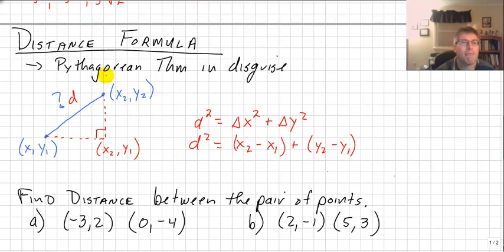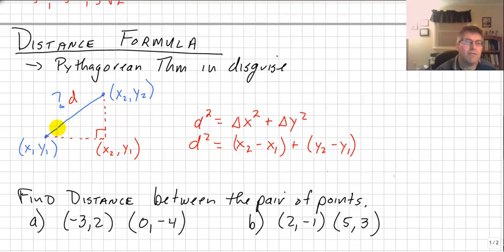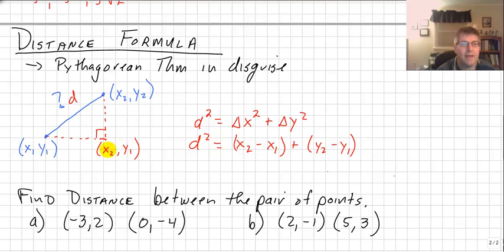Let's take a look at the distance formula. The distance formula is really the Pythagorean theorem in disguise. If we want to find the length of a segment on the coordinate plane and call it d, we have two ordered pairs x1, y1 and x2, y2. With any two points, we can make this into a right triangle by going over and then up. The x coordinate at the right angle is going to be x2, as far right as x2 but only as high as y1.